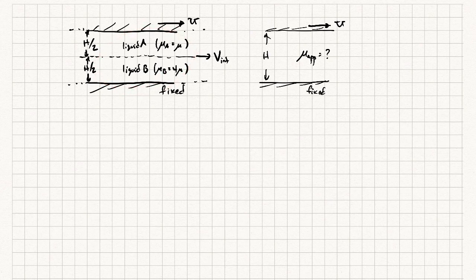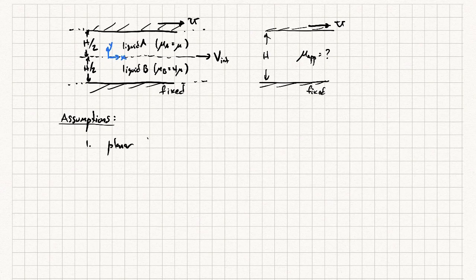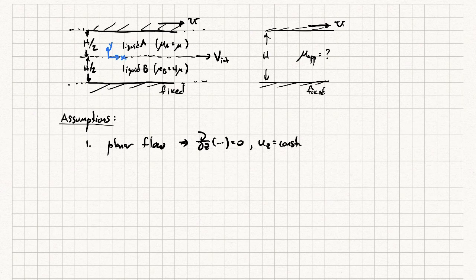This is a Navier-Stokes solution example because it's the Couette flow geometry, so we should be able to find it by solving the Navier-Stokes equation. Let's put a coordinate system on there — we'll call this y, and x in that direction. Just like with other Navier-Stokes solutions, we're going to make a number of assumptions, then look at the continuity equation and the Navier-Stokes equation in an appropriate direction.